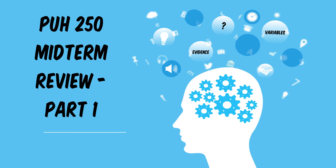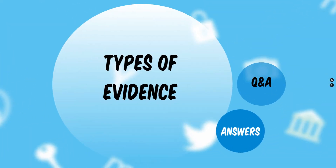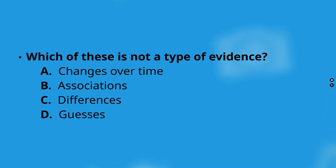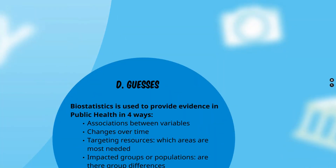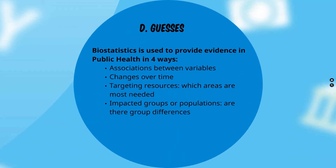What about evidence? Let's look at the types of evidence. Which of the following is not a type of evidence? Changes over time, associations, differences, or guesses? The answer is D — guesses. Biostatistics is used to provide evidence in public health in four ways, and guessing is not one of them.